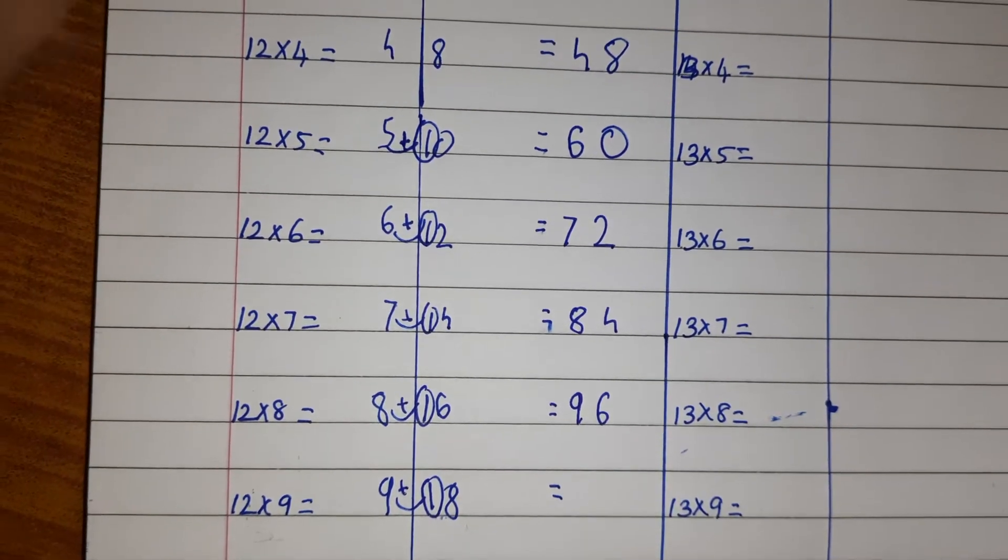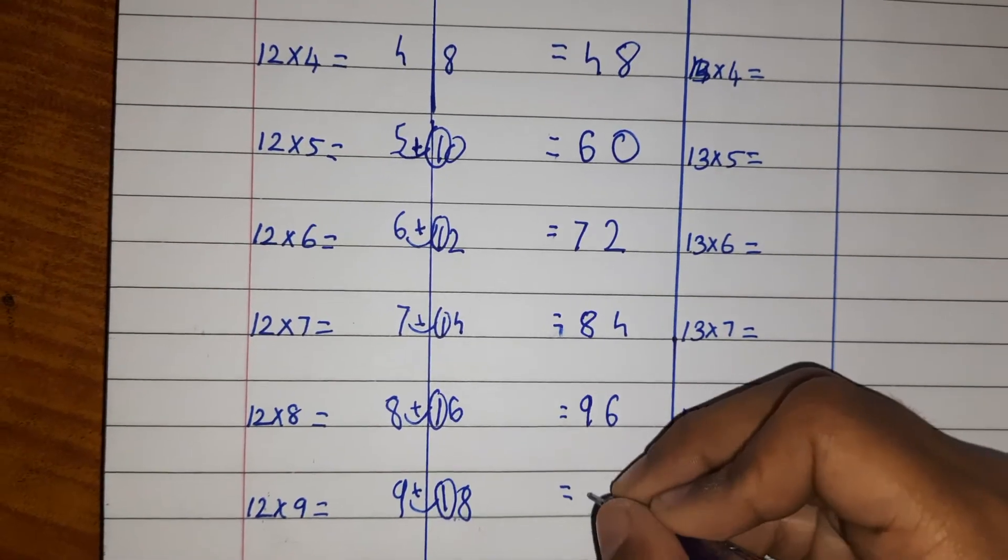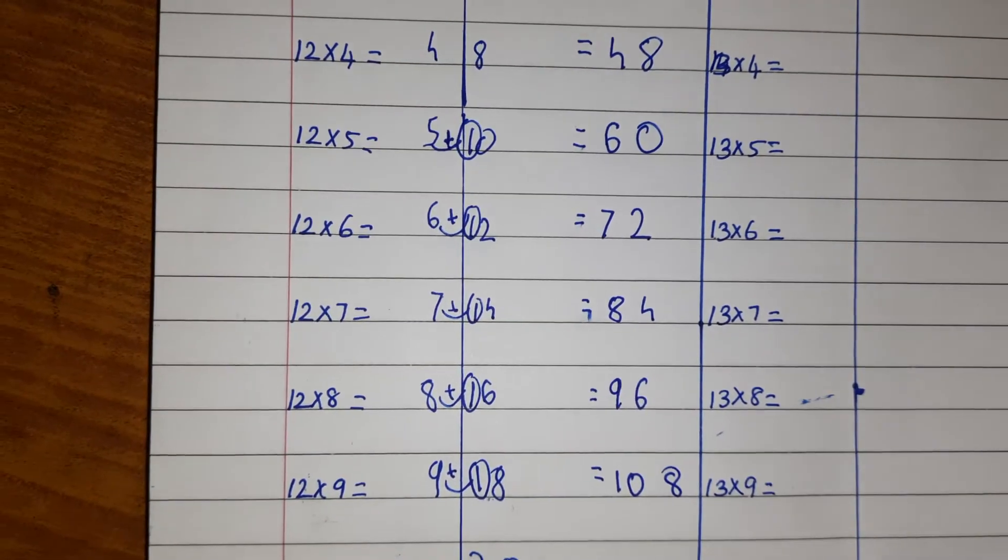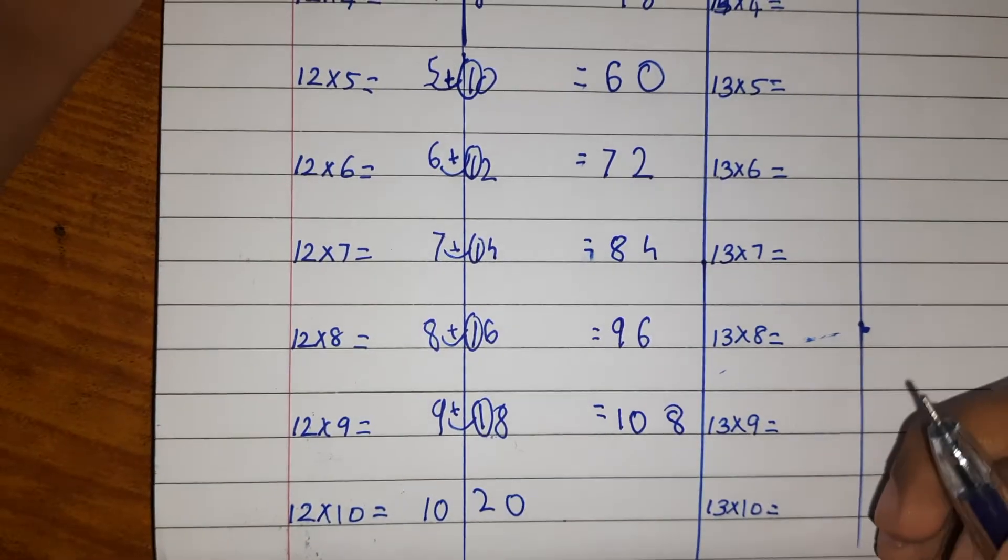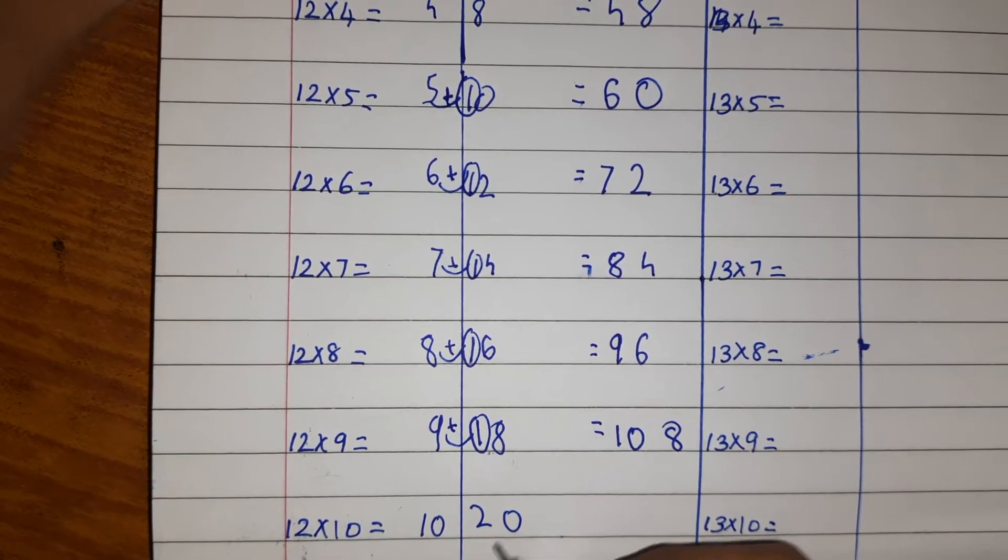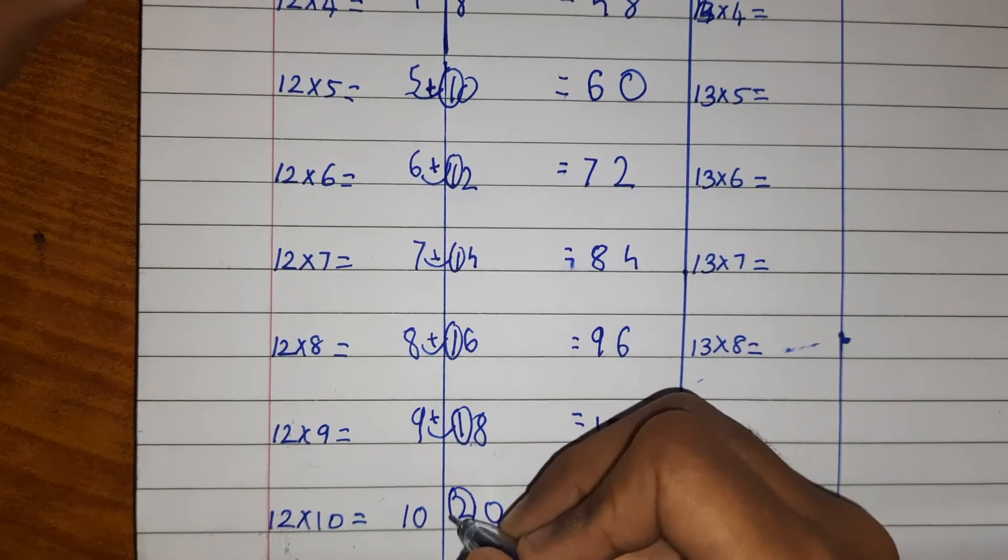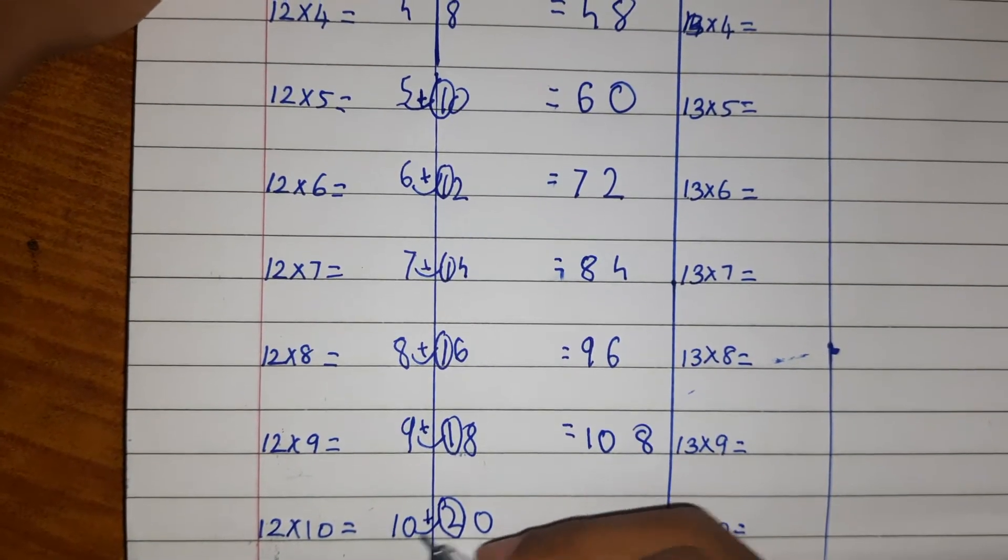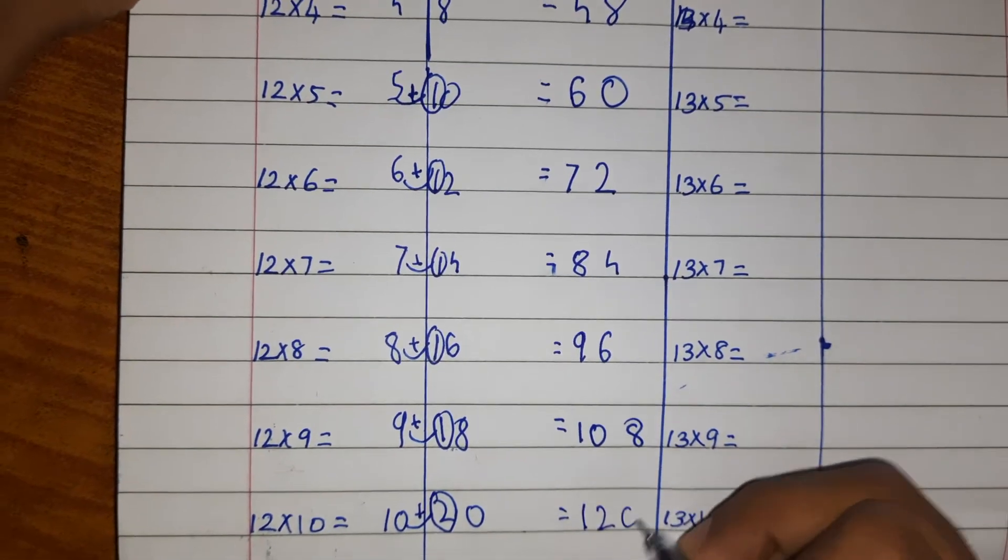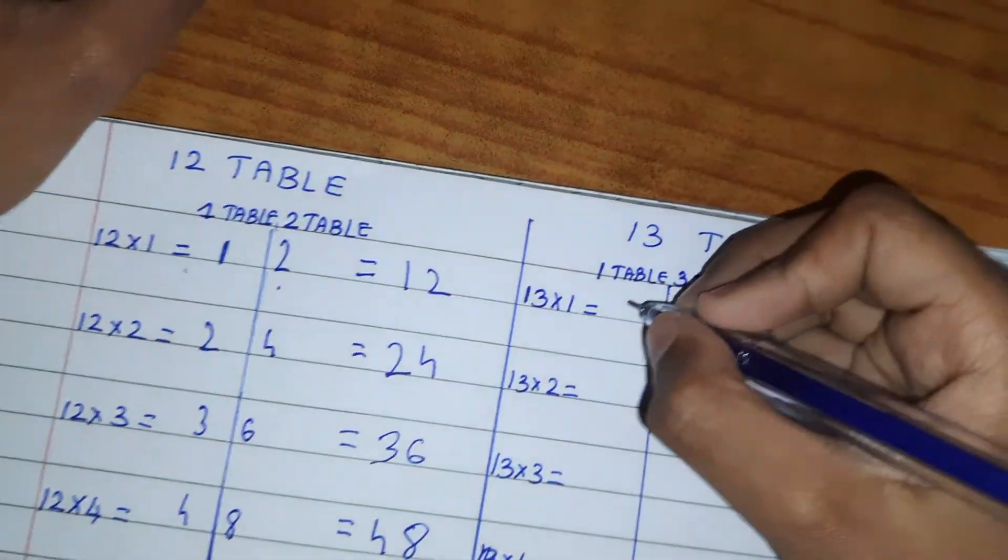108. Now, now we see this two and we should take that two and add it to zero, and it comes 120. Easy. Let's write the 13th table.